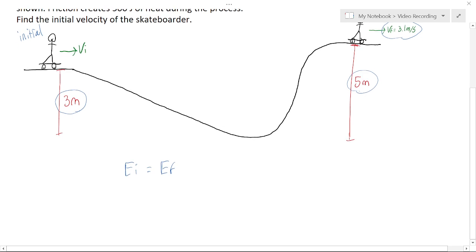The energy initial, well, we have some kinetic energy initial because we have initial velocity. That's what we're looking for. We're also 3 meters high at the start, so we have some potential initial.